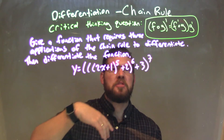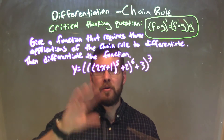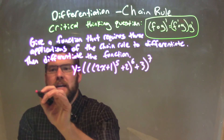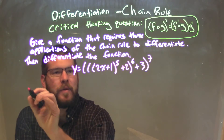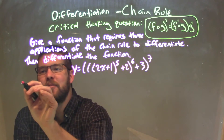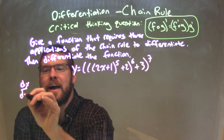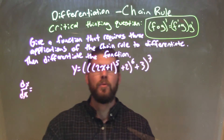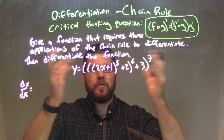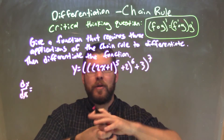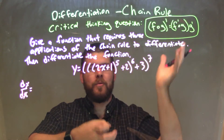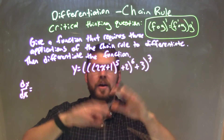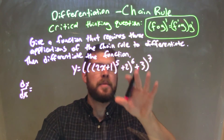Let's go apply that chain rule. I'm going to give myself plenty of space here. So, dy/dx. Think outside in — think of those like Russian dolls, where one comes off, then the next one, the next one, and keep going inside.